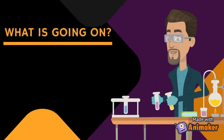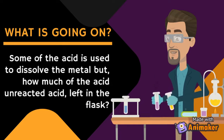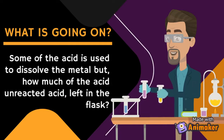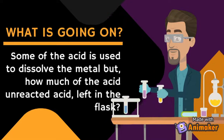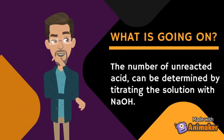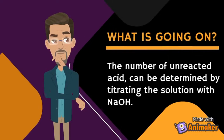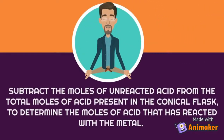What happens here is some of the acid is used to dissolve the metal. However, how can we determine the number of unreacted acid left in the conical flask? The number of unreacted acid can be determined by titrating the solution with sodium hydroxide. By subtracting the moles of unreacted acid from the total moles of acid present in the conical flask, we can determine the moles of acid that has reacted with the metal.